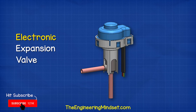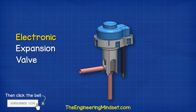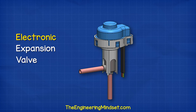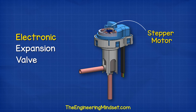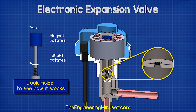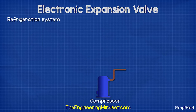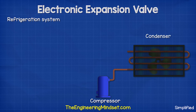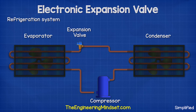This is an electronic expansion valve from a refrigeration system, but this type is electronically controlled using a stepper motor, so we're going to look inside one to see how it works. When we look at a typical refrigeration system we have the compressor, the condenser, the expansion valve, and the evaporator.